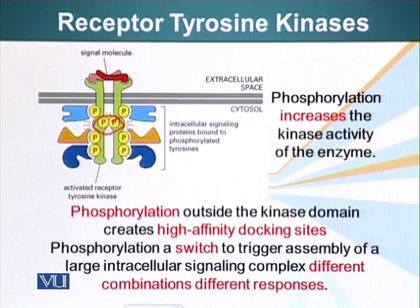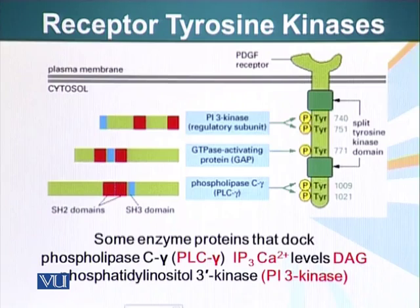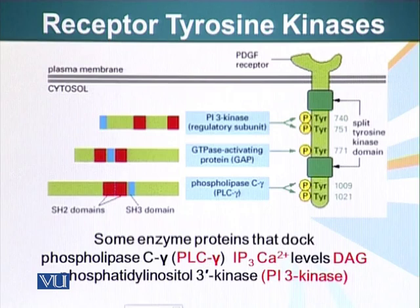This phosphorylation results in binding of other proteins that can interact with these domains. Some of these proteins are, for example, phospholipase C — a protein we already discussed in the context of G-protein coupled receptors. It is a different version but does essentially the same thing: it generates inositol phosphate, which increases calcium ion concentration in the cytoplasm, and it generates diacylglycerol in the plasma membrane where that phosphatidyl inositol has been cleaved.